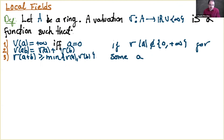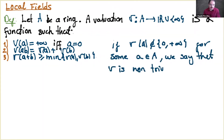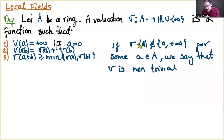A valuation is non-trivial if there exists an element a in A such that v(a) is neither zero nor infinity. We consider in general non-trivial valuations. A valuation defines an absolute value as we saw with Miriam — not only for p-adic numbers but for any ring with a valuation.